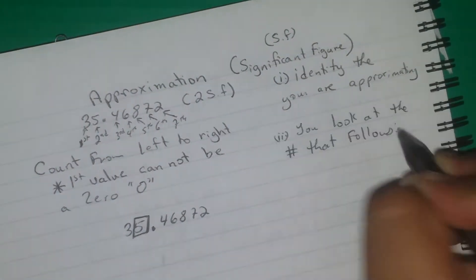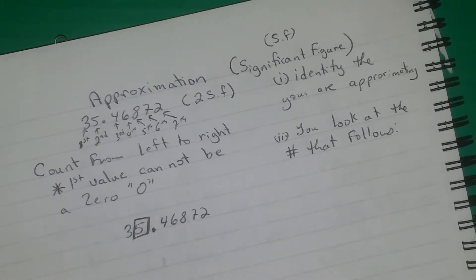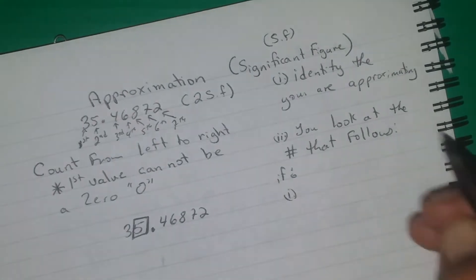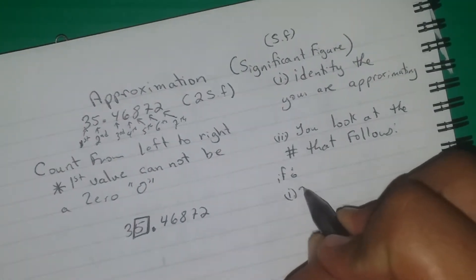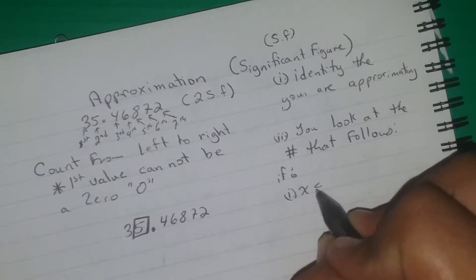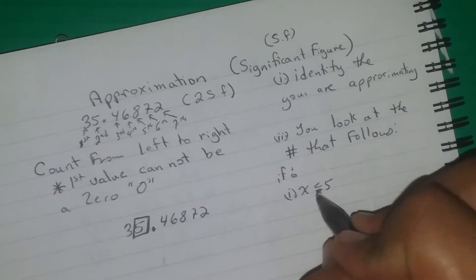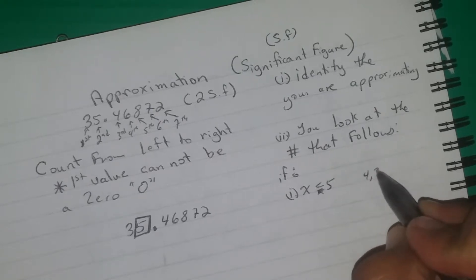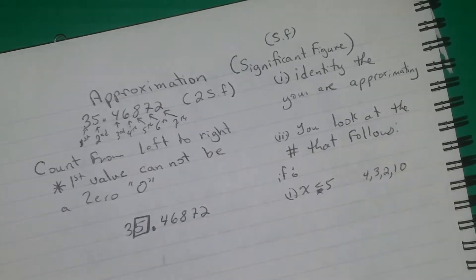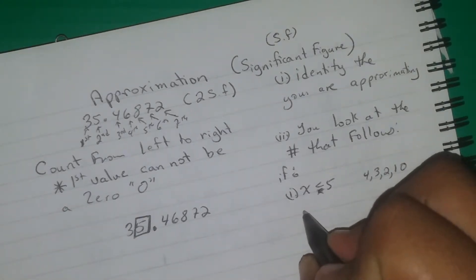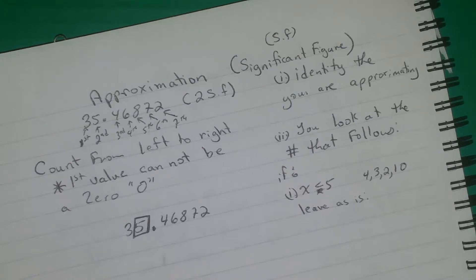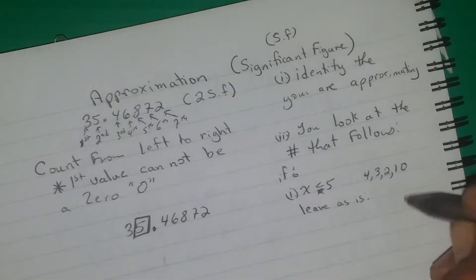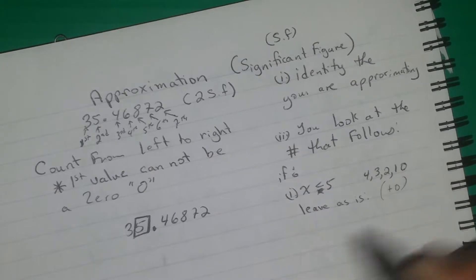Look at the number that follows. If that number is less than 5 — meaning 4, 3, 2, 1, or 0 — then you leave as is. You leave as is, which means the 5 will not change. Or we can say plus 0, which will not change that number.